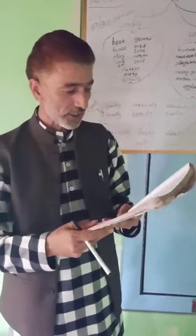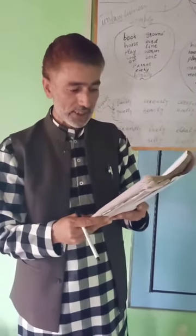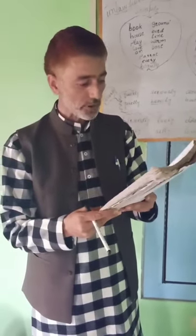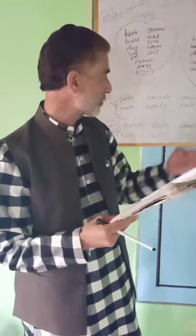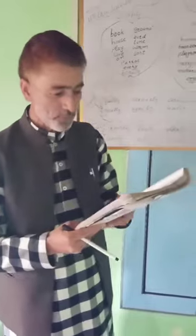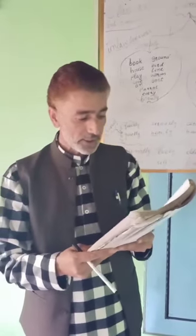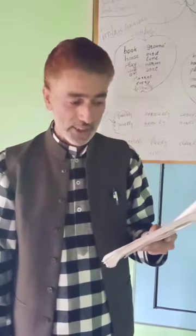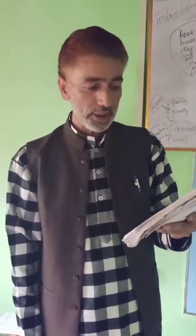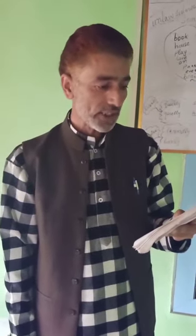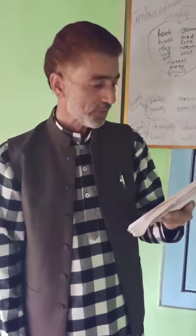The next section: complete each sentence with an adverb — the first letter of the adverb is given. Some adverbs are made by adding '-ly' to adjectives. For example: 'We didn't go out because it was raining — HE' — the answer is 'heavily.' Second: 'Our team lost the game because we played very — BA' — the answer is 'badly.' There are more sentences to complete on your own.